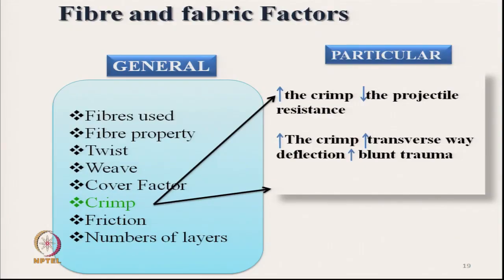Crimp is very important for ballistic protective clothing. We should have fabric with least crimp in yarn — if we increase the crimp, projectile resistance will be reduced. As crimp increases, transverse deflection will increase, which will result in blunt trauma. The blunt trauma measurement process will be discussed later in this class.